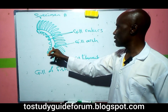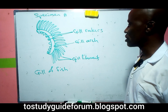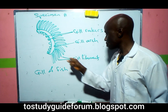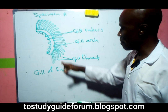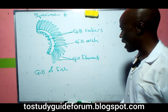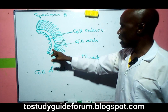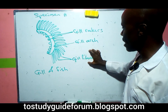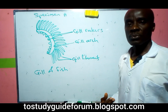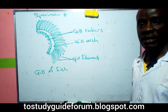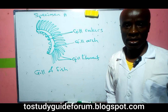The gill arc is where the filaments are built upon. The filament is a major part that does the work of respiration in aquatic animals like fish.